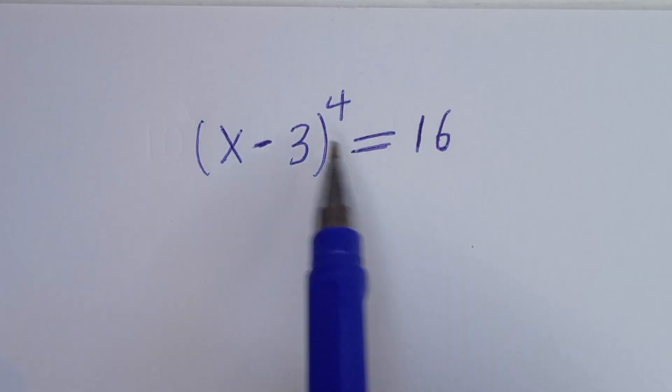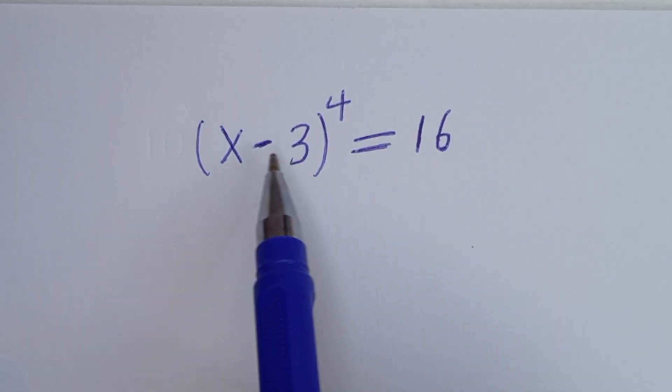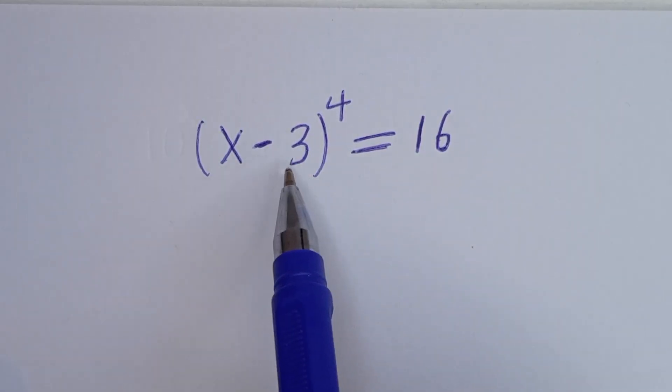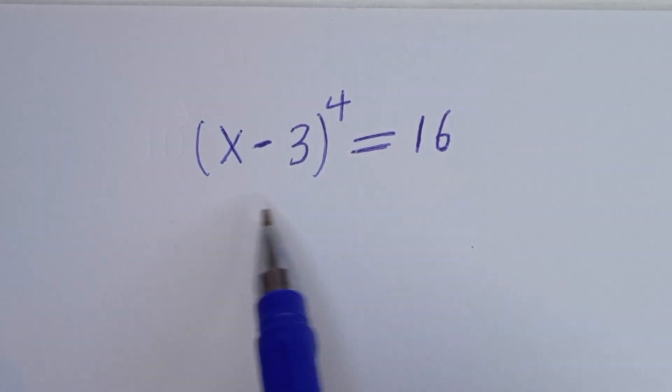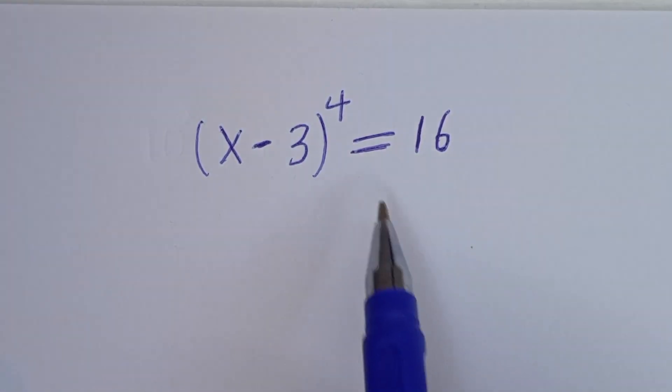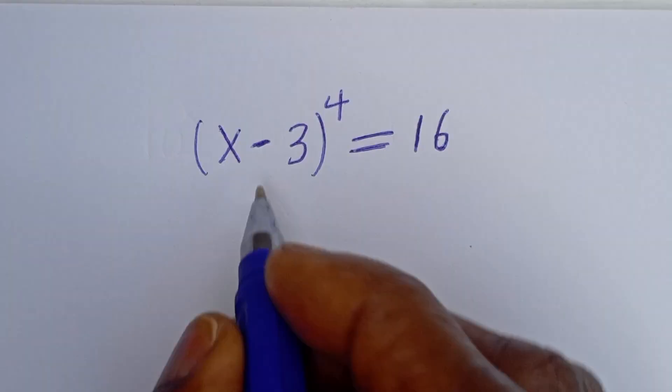Hello, how to solve for S in this equation: S minus 3 to the power of 4 is equal to 16.